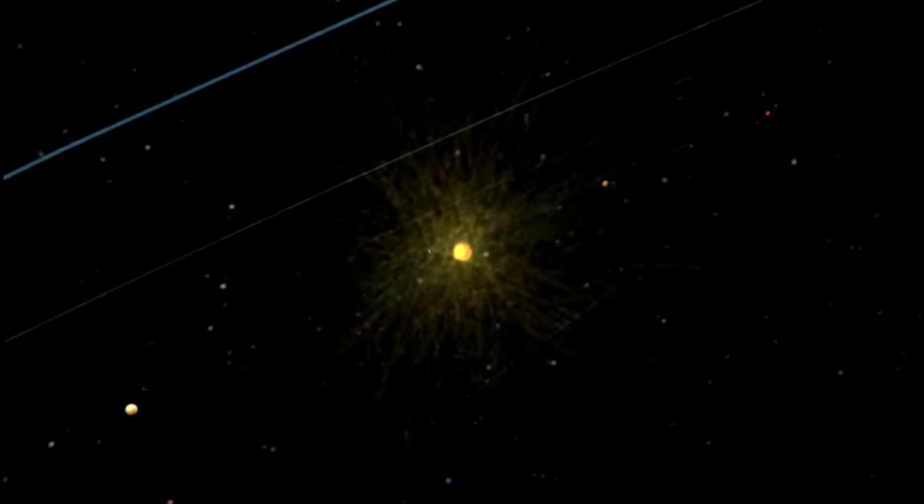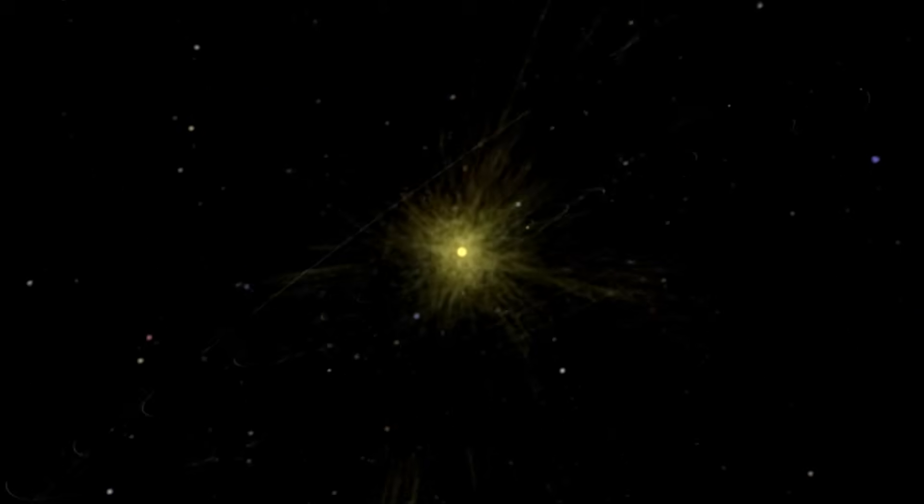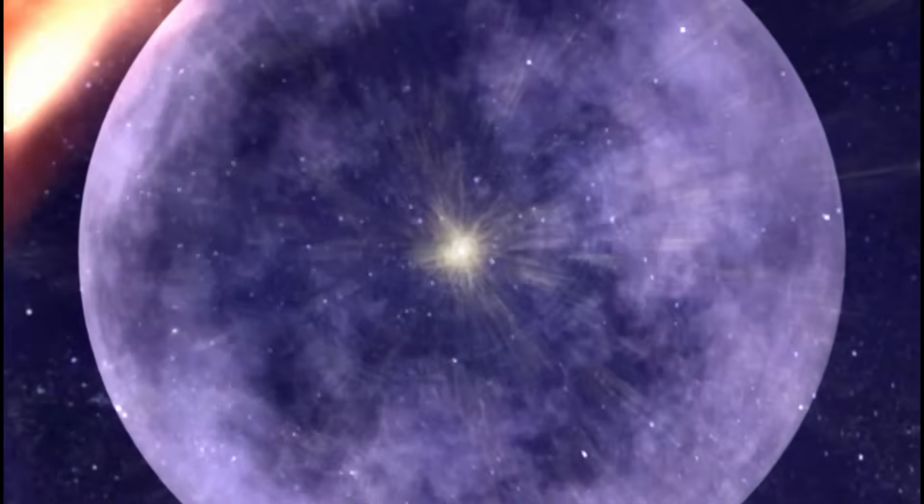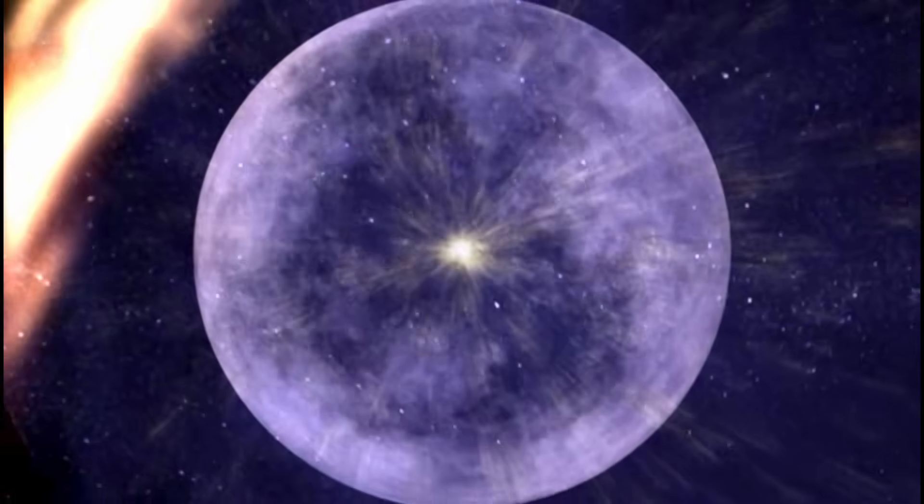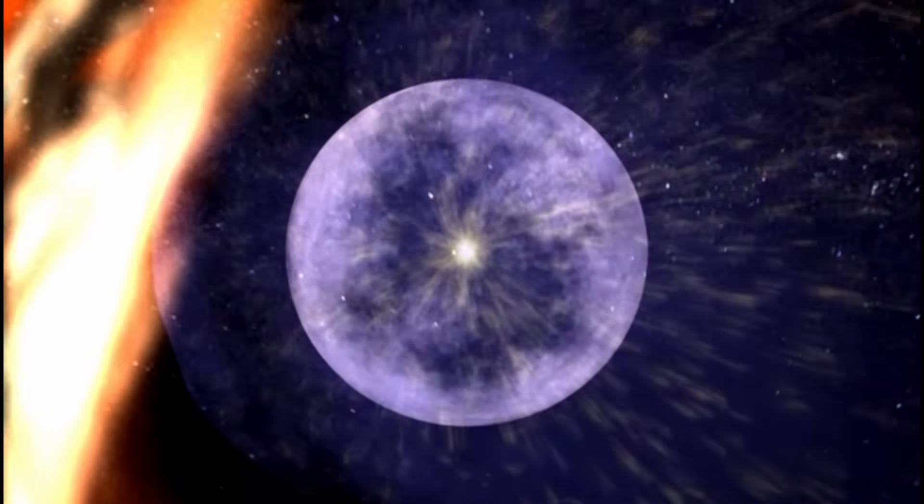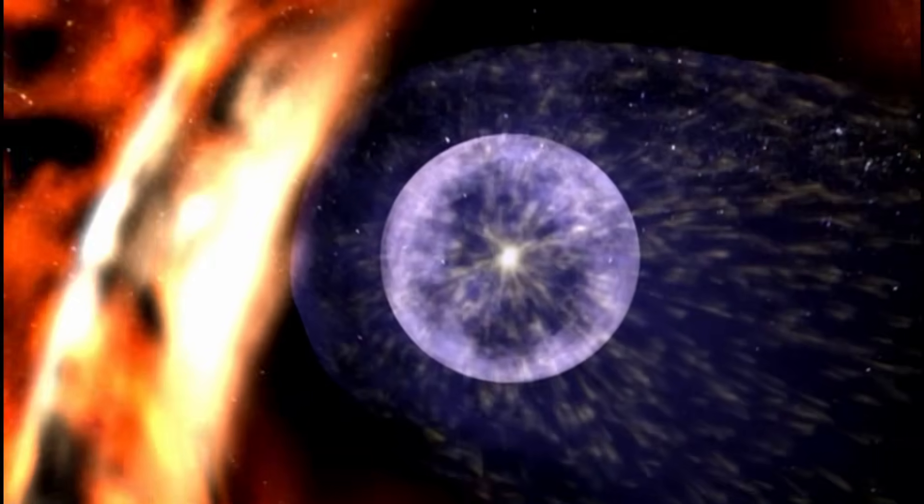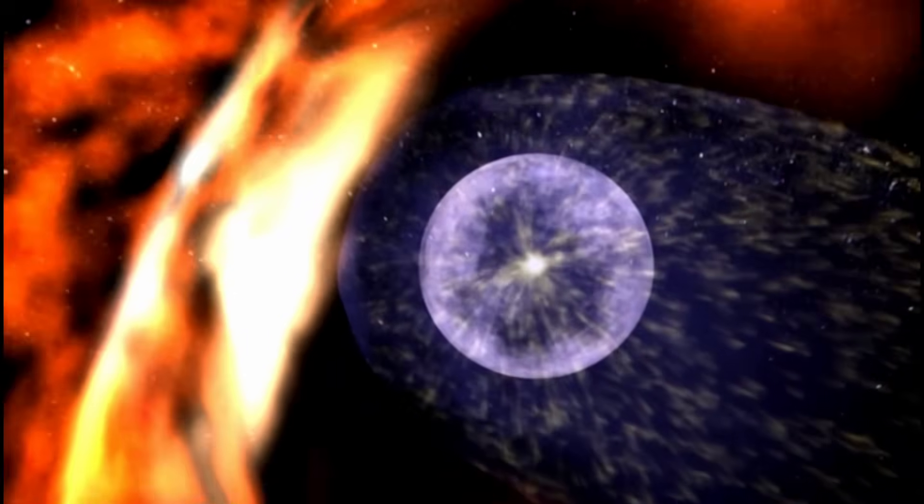Our Sun constantly emits a stream of charged particles called the solar wind. This wind creates a giant magnetic bubble around the solar system called the heliosphere. This bubble is a vital shield that protects us from the majority of harmful cosmic radiation coming from the rest of the galaxy.